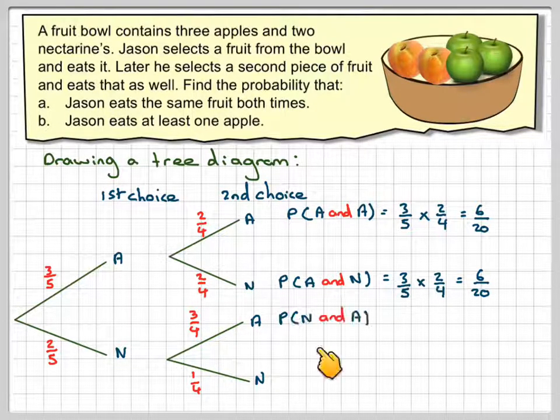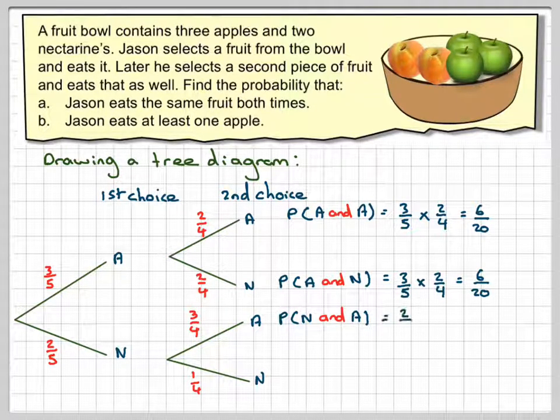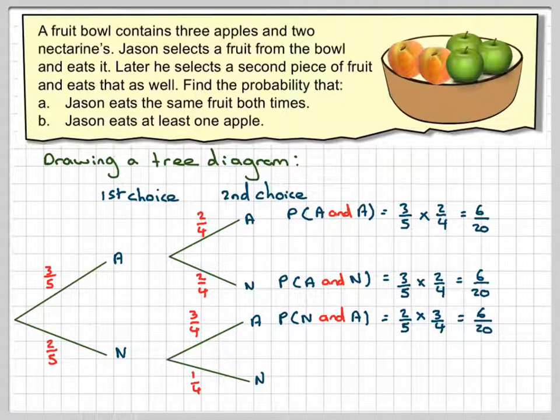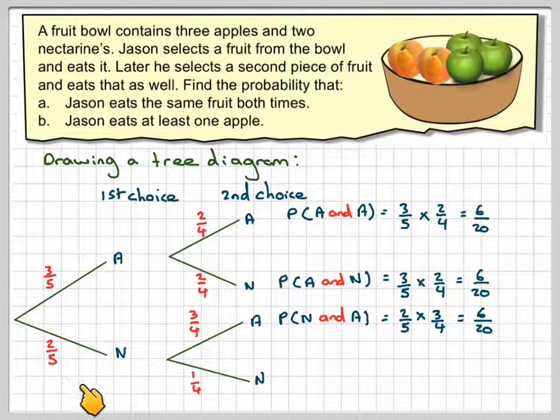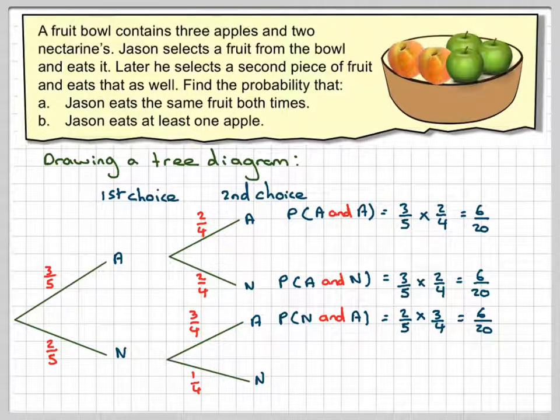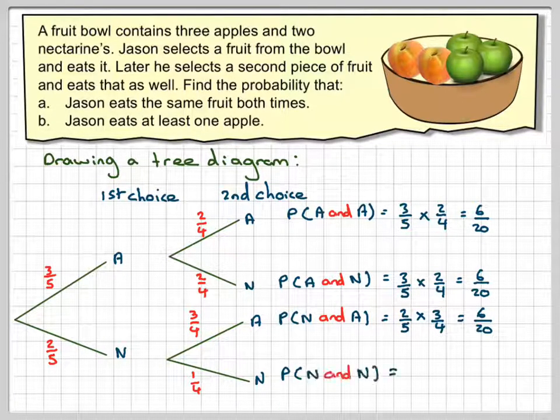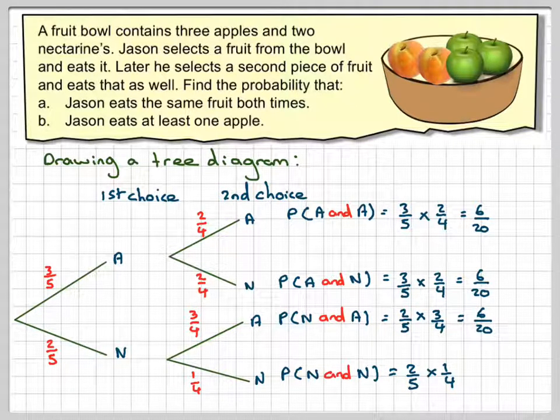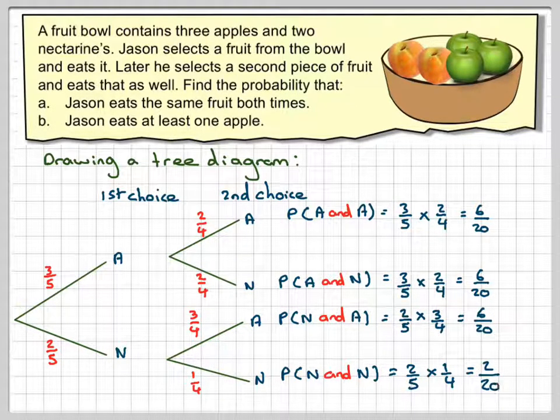And a nectarine followed by an apple, so the probability of a nectarine and an apple will be two-fifths times three-quarters which again is six out of twenty. And then the probability of getting a nectarine and a nectarine will be two-fifths times one-quarter which is two out of twenty.